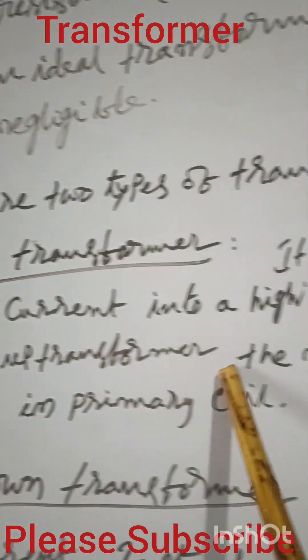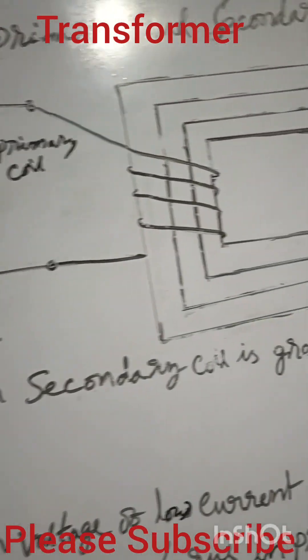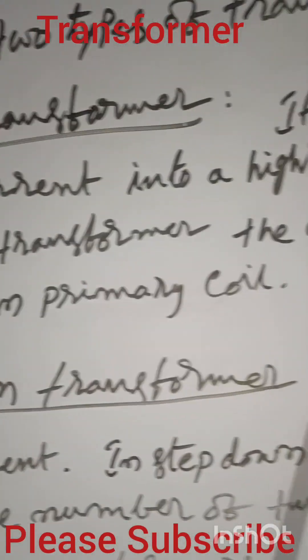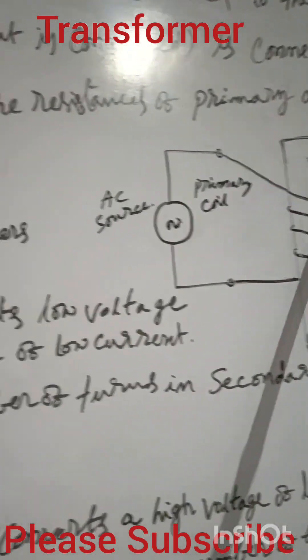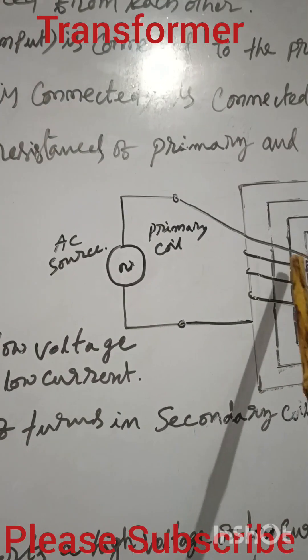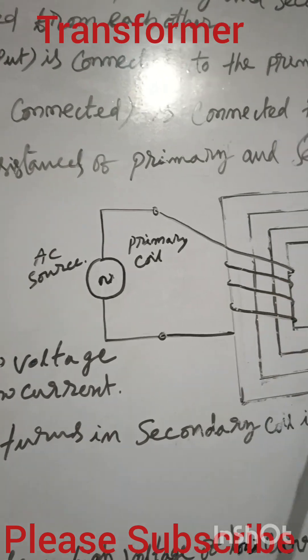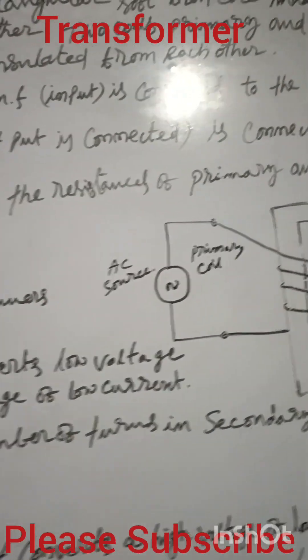Then in step up transformer, the number of turns in the secondary coil is greater than the number of turns in the primary coil. See number of turns in the secondary coil will be more. Because the turn per coil, turn per voltage is to be multiplied. That's why this turn will be more, voltage will be more.